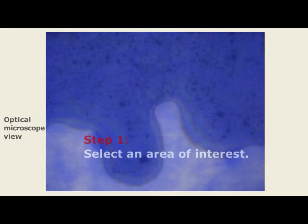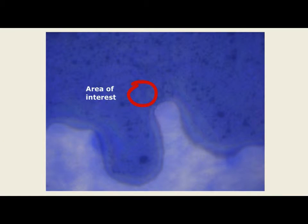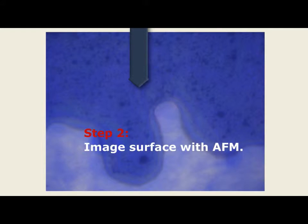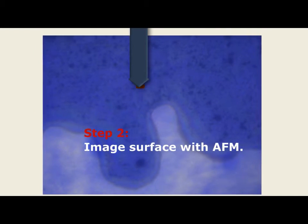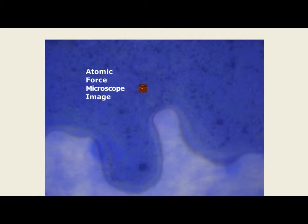We start out with an optical microscope view and select an area of interest where we want to perform a measurement. We bring the AFM tip down to the sample, start scanning the sample, and create a conventional atomic force microscope image.